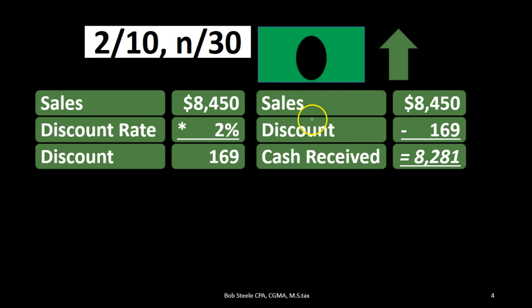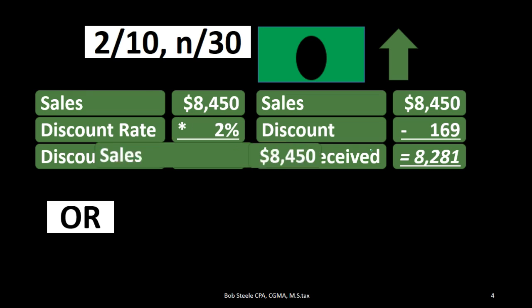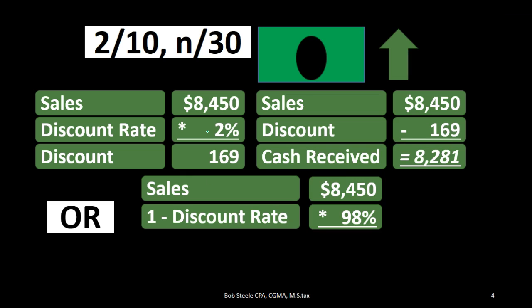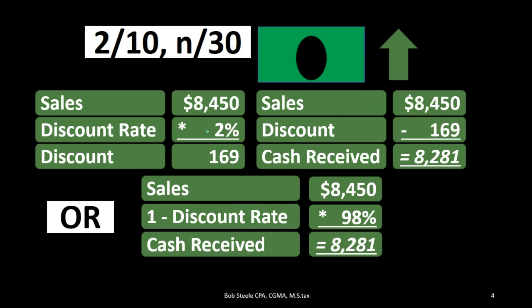We can do that more quickly with a shortcut: if we're not going to get 2% of the money, how much are we going to get? 100% minus 2% equals 98%. So we take the sales price times 98% — or equivalently, 100% minus the 2% — and we get the same $8,281. That's how much cash we are actually going to receive.